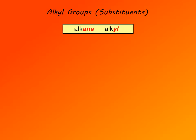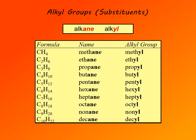Alkyl groups or substituents are named after the corresponding alkanes. We drop the suffix '-ane' of the alkane and replace it with '-yl' for the alkyl group. So as substituents: methane becomes methyl, ethane becomes ethyl, propane becomes propyl, and so on. For example, nonane would become nonyl, decane becomes decyl.